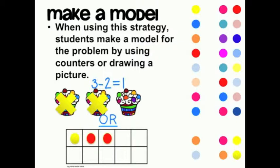For example, in the equation 3 minus 2 equals 1, we started with 3 cupcakes. I X two of the cupcakes out to show we are taking those away. The remaining number of cupcakes is my answer.